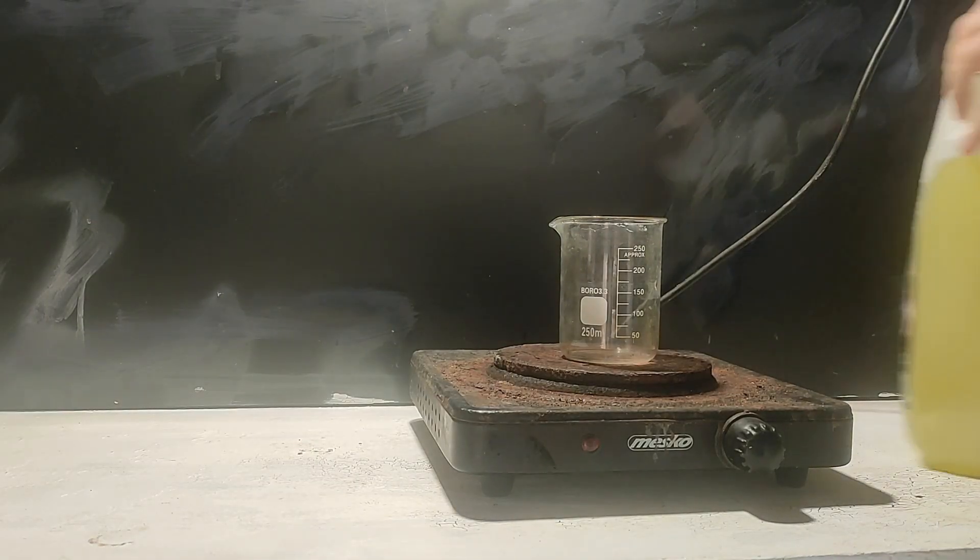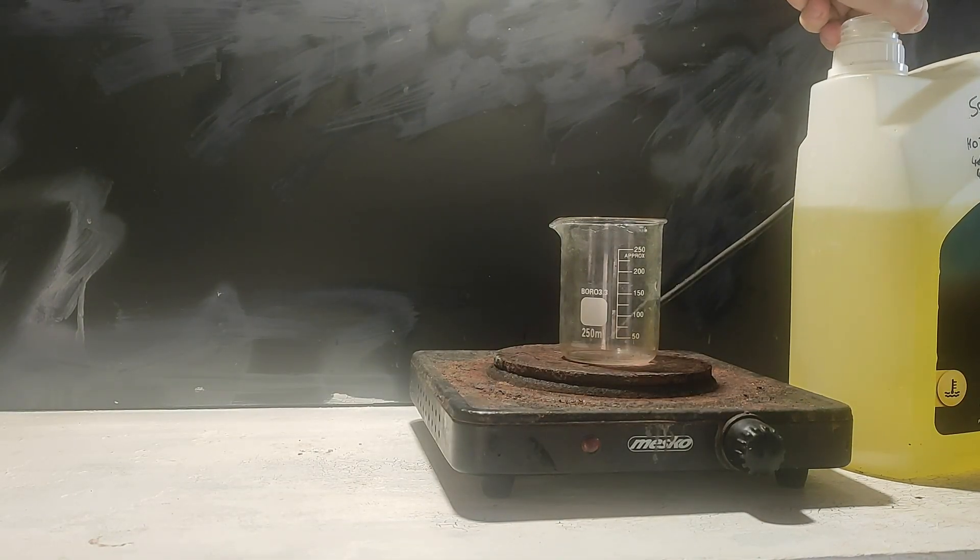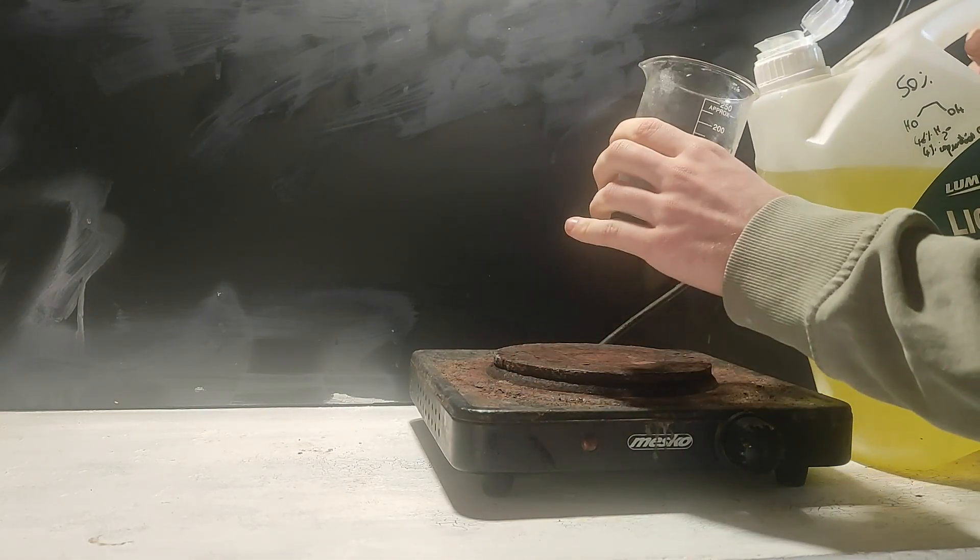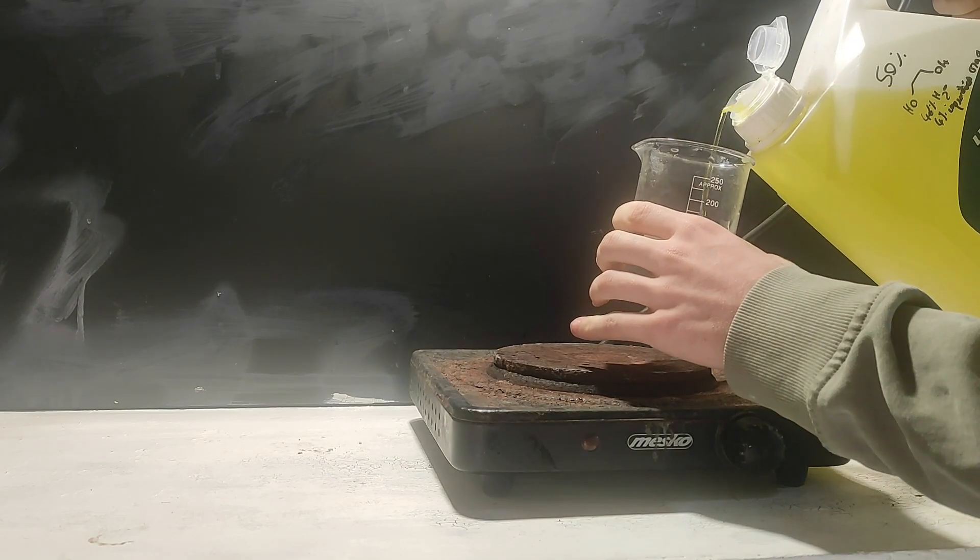Thankfully, ethylene glycol has a very high boiling point of 197 degrees, which means I can boil off the water and alcohol to be left with mostly ethylene glycol. So I set up the hot plate with the beaker and start to heat.